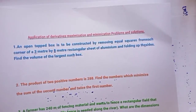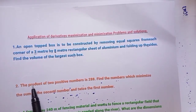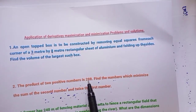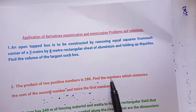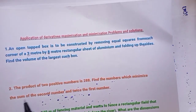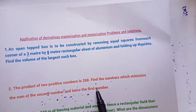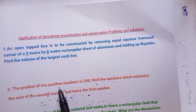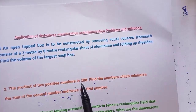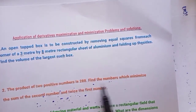The next question, question number 2: the product of two positive numbers is 288. What are the numbers which minimize the sum of the second number and twice the first number?